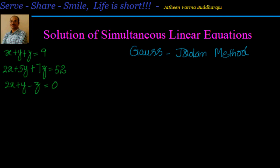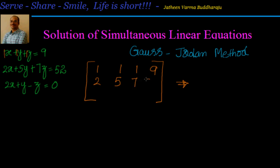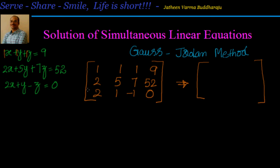As part of the Gauss-Jordan method, let's spend a couple of minutes to understand. We take the augmented matrix, which contains all the coefficients and constants. For x plus y plus z equal to 9, we write 1 1 1 9; similarly 2 5 7 52, and 2 1 -1 0. By applying row transformations — adding, subtracting, or multiplying equations by a constant — we want to convert it into an identity matrix.